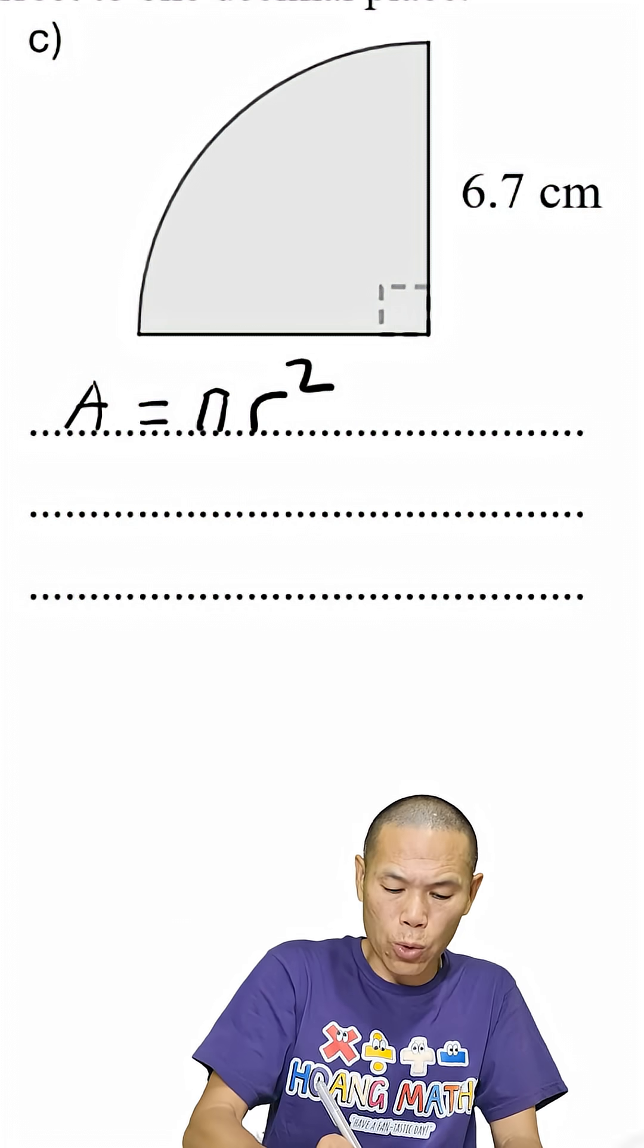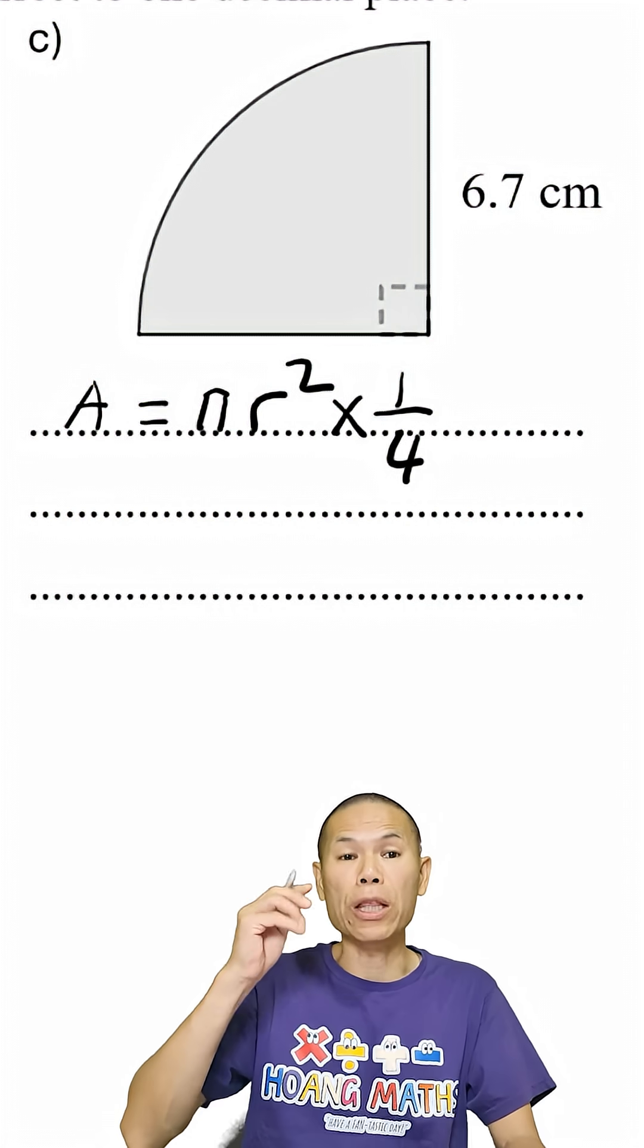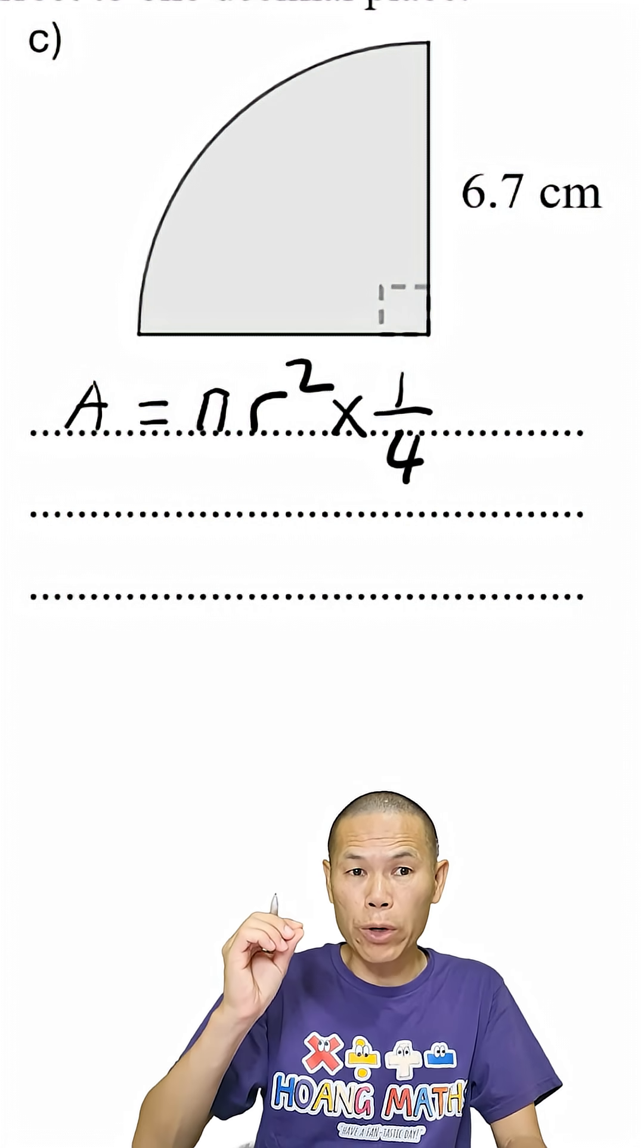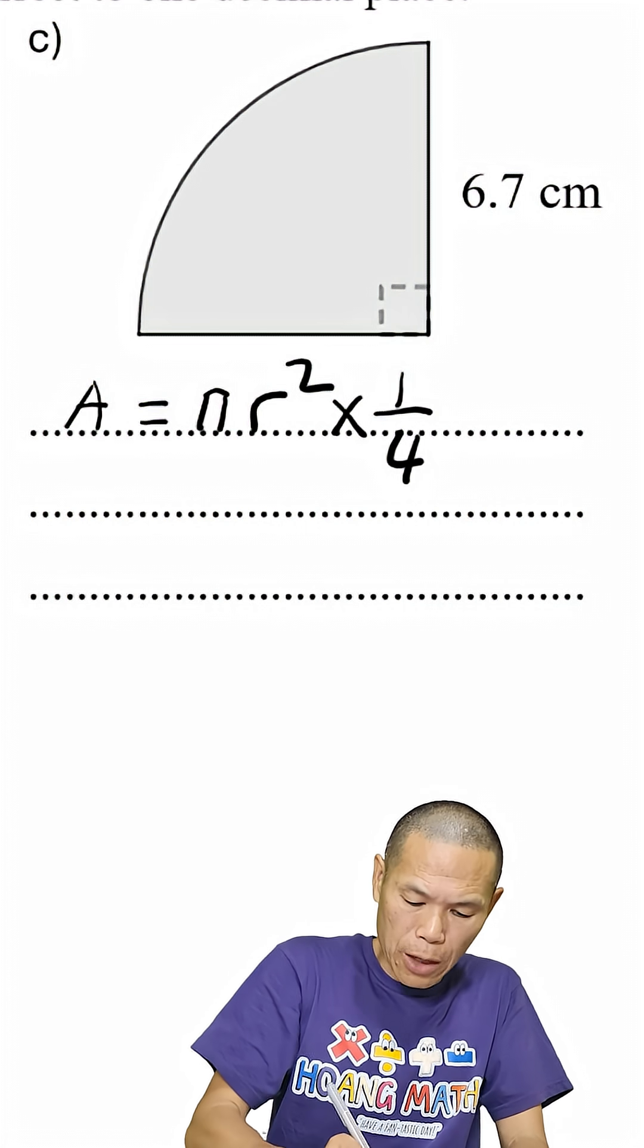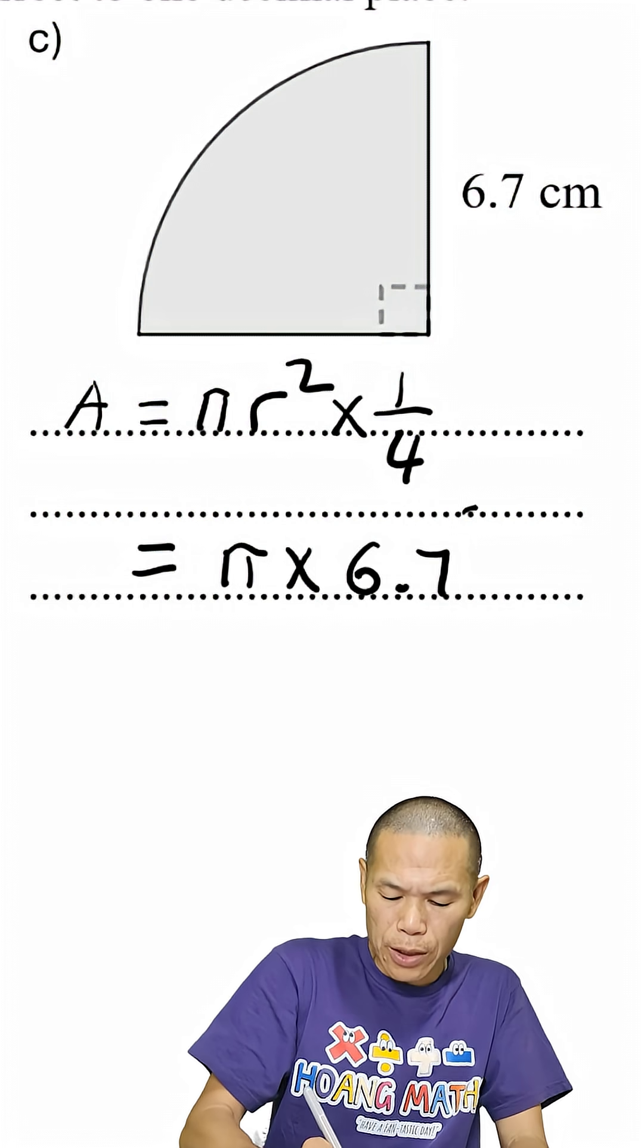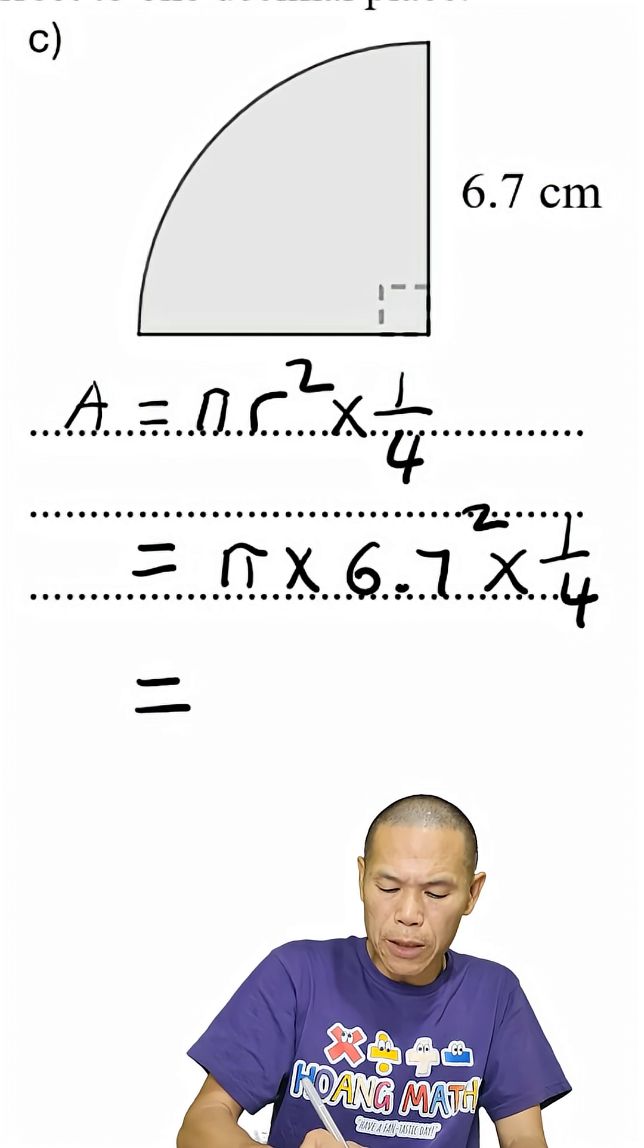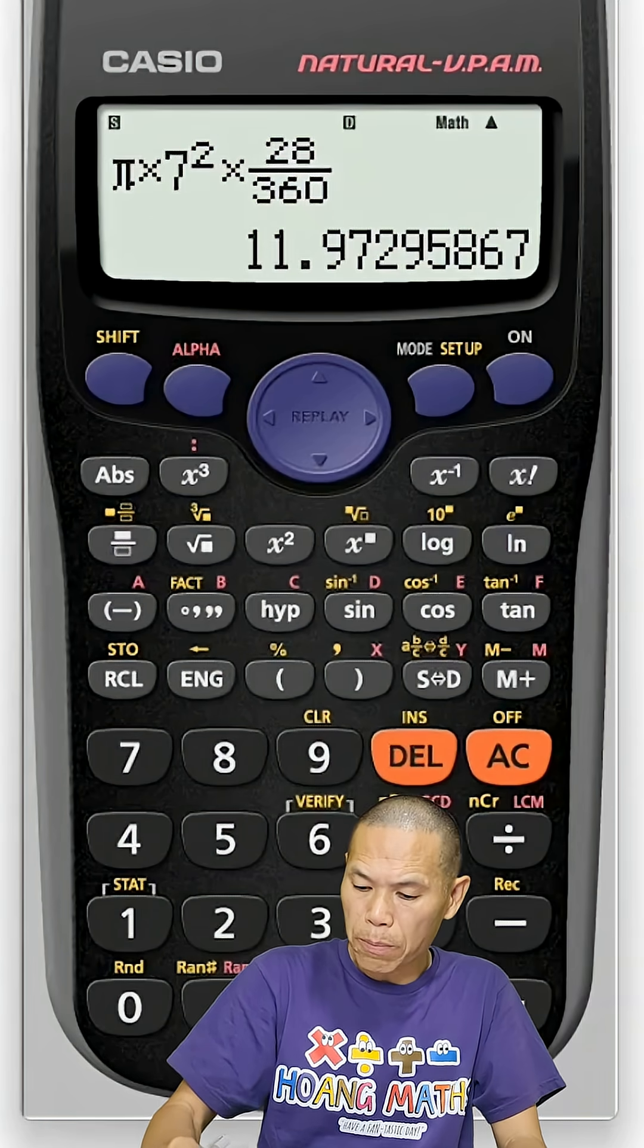Because it is a quarter of a circle, so times by a quarter. And we know that the radius is 6.7, so that will give me π times 6.7 squared times a quarter. So that will give me shift π times 6.7 squared times 1 over 4.